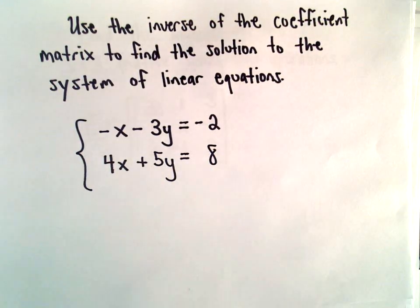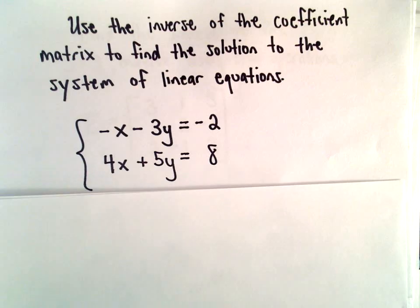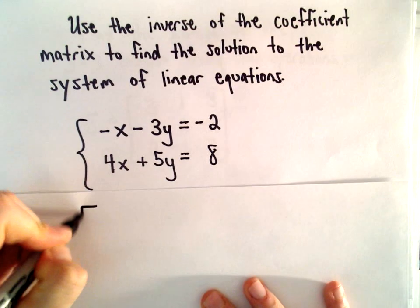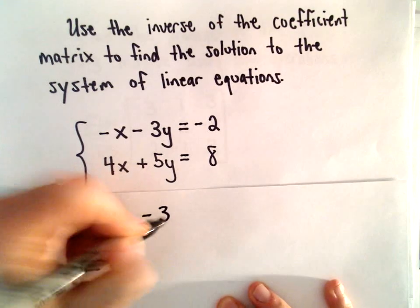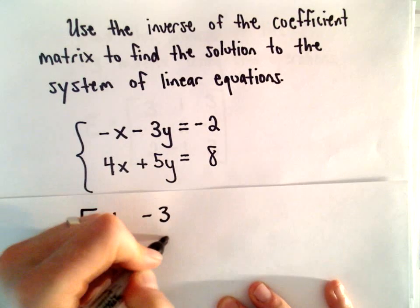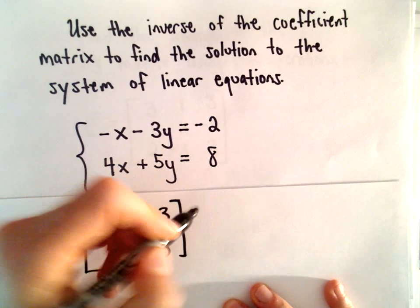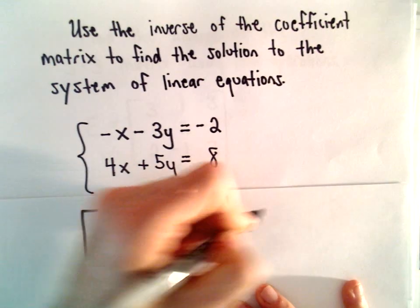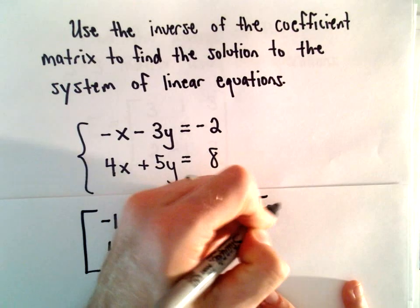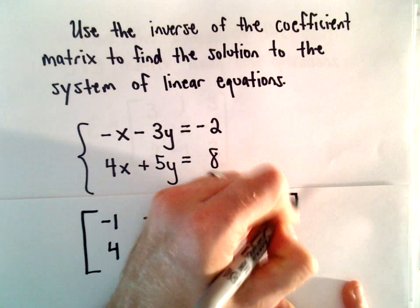So the idea is we can write this system of equations using matrices. If we look at the coefficients, we have negative 1, negative 3, positive 4, positive 5. We can multiply that by x and y, and that's going to equal negative 2 and 8.